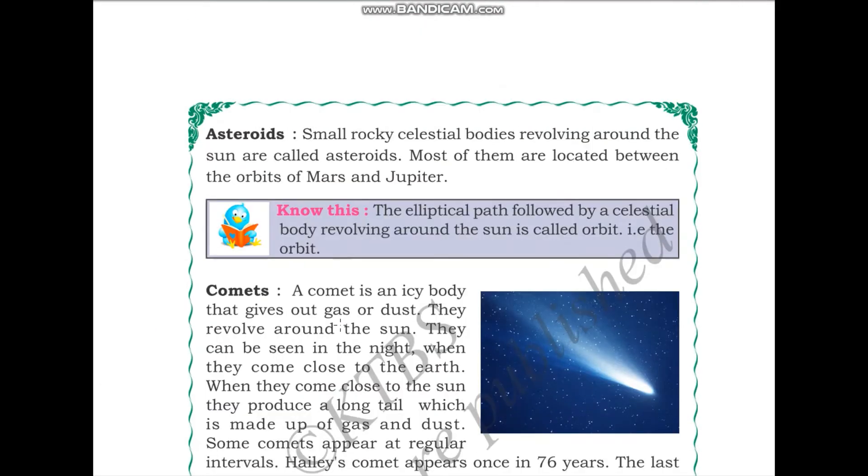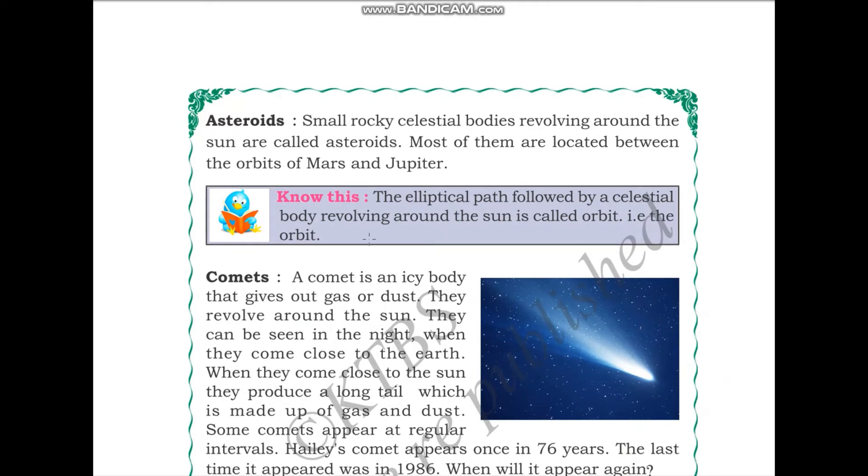Next, let us move on to asteroids. Asteroids are small rocky celestial bodies revolving around the sun, so small rocky celestial bodies revolving around the sun are called asteroids. Most of them are located between the orbits of Mars and Jupiter.